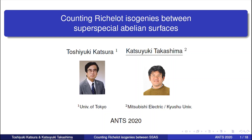Hi everyone. Today I'd like to talk about counting Richelot isogenies between super-special abelian surfaces. My name is Katsuyuki Takashima. This is a joint work with Toshiyuki Katsura.